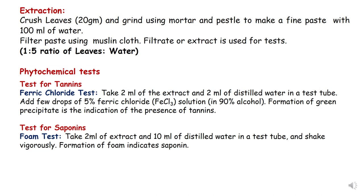For the tannin test, also called the ferric chloride test, take 2 ml of the extract and add 2 ml of distilled water in a test tube, then add a few drops of 5% ferric chloride solution made in 90% alcohol. The formation of a green precipitate gives the indication that tannins are present in the sample.